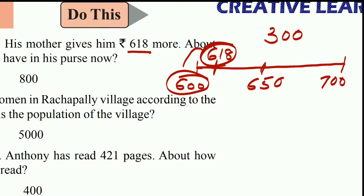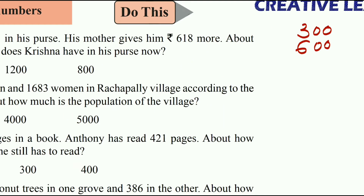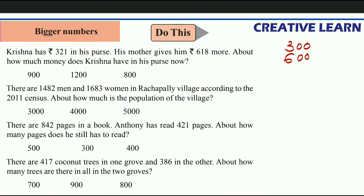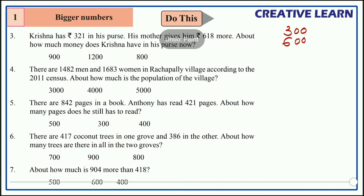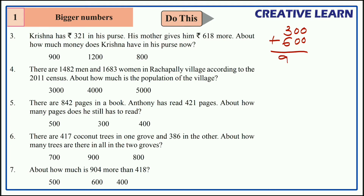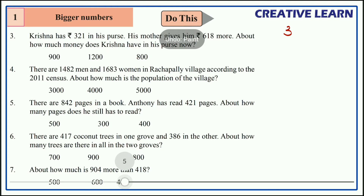618 is before 650, so from this we can identify that 618 is nearer to 600. Now, Krishna already had approximately 300 and his mother gave approximately 600, so 300 plus 600 equals 900. Our answer is 900.